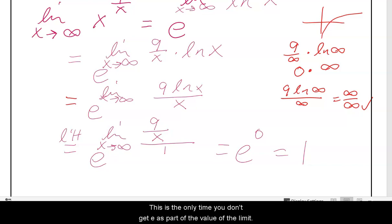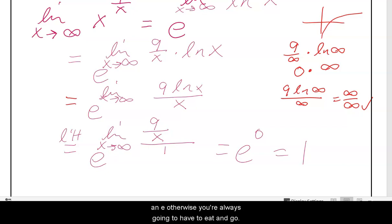This is the only time you don't get e as part of the value of the limit. If the power on e is 0, you just get the number 1 without an e. Otherwise, you're always going to have the e involved.